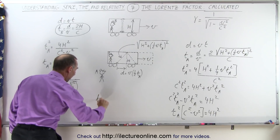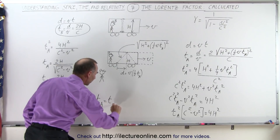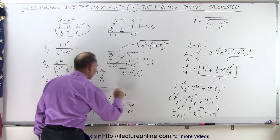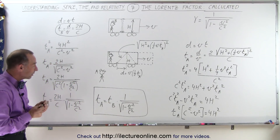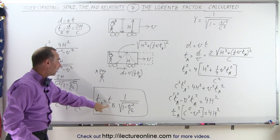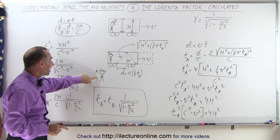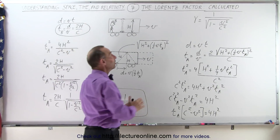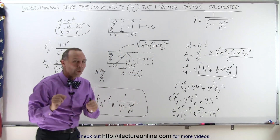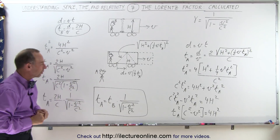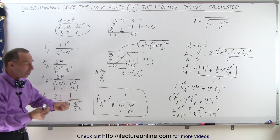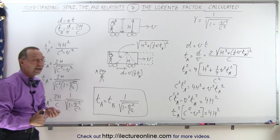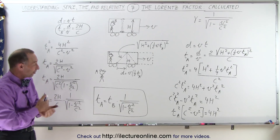That means the time as measured by A equals the time as measured by B times one over the square root of (1 minus V squared over C squared). This is where the transformation equation came from: the time measured by the stationary observer A equals the time measured by the observer moving with the event, multiplied by one over the square root of (1 minus V squared over C squared) — now known as the Lorentz factor. That's where the Lorentz factor came from, how it was derived, and why it's the equation we use to convert between time measured by a moving observer and time measured in a stationary reference frame.